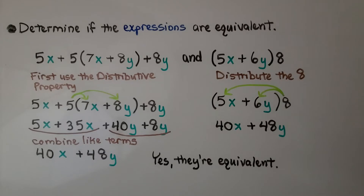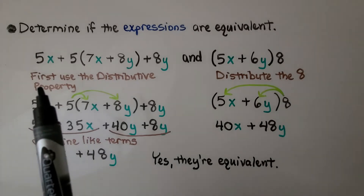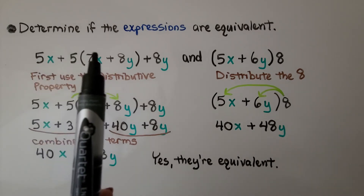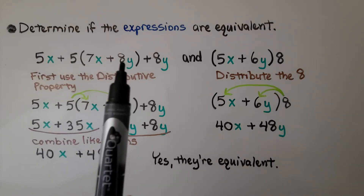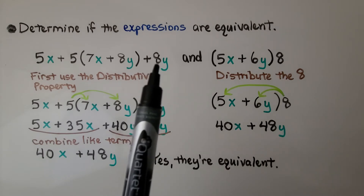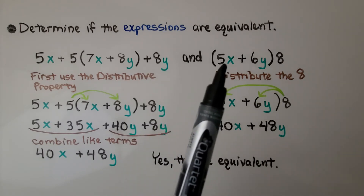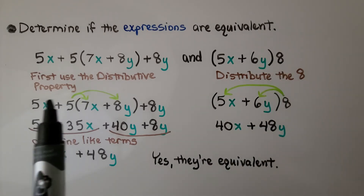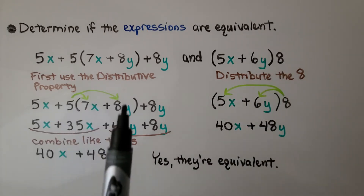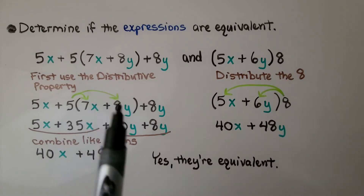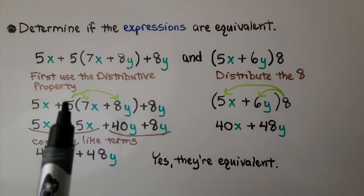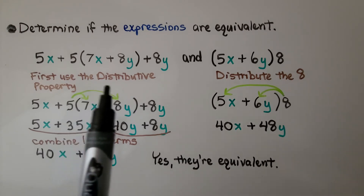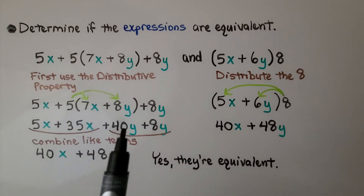Determine if the expressions are equivalent. We have a long expression: 5x plus 5 times (7x plus 8y) plus 8y, compared to (5x plus 6y) times 8. For the first one, we can use the distributive property on the middle term: 5 times 7x gives us 35x, and 5 times 8y gives us 40y.